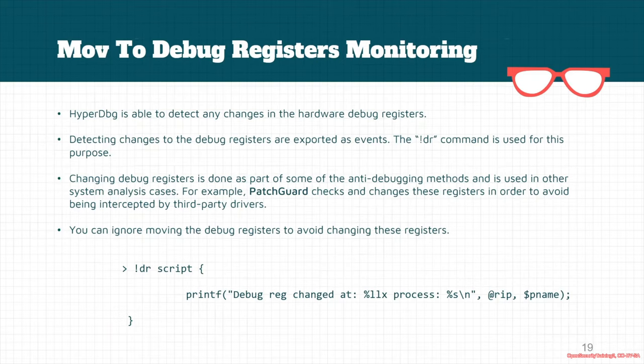Anti-debugging methods more or less try to prevent you from setting some of the debug registers. You could easily bypass that here by ignoring changes to the debug register or performing some changes to the debug register. The DR command is used for this purpose.